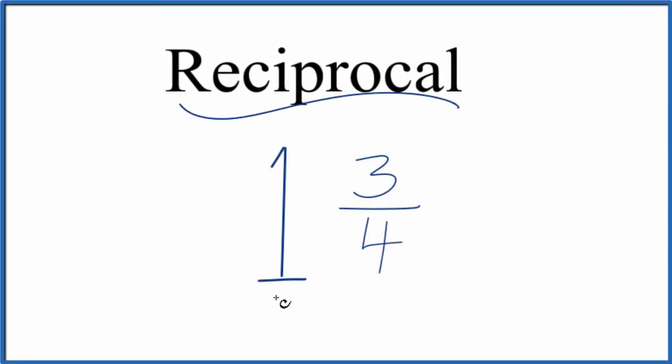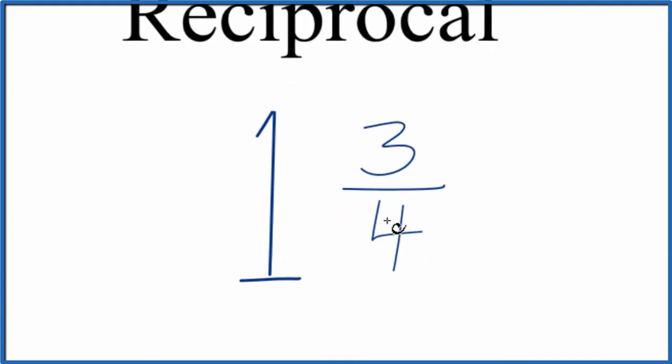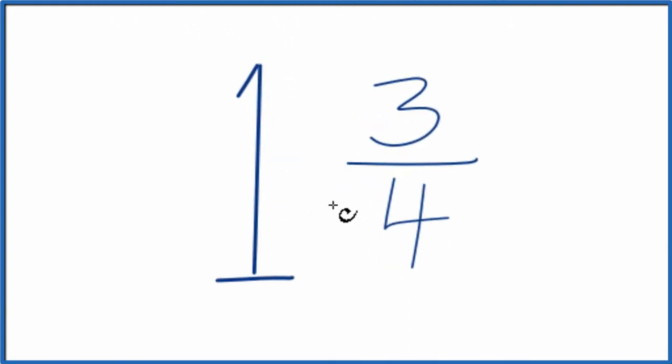Let's find the reciprocal for one and three-fourths. Starting right out, when we want to find the reciprocal, we need to put this in the form of an improper fraction.